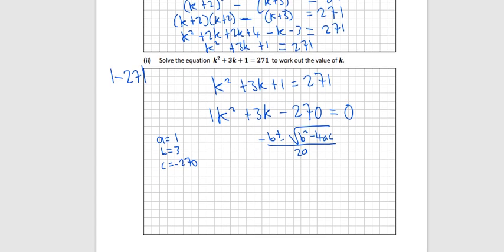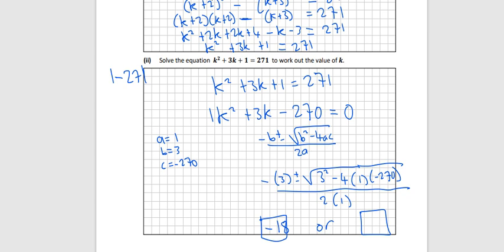Check your log tables for that. You'll have minus 3, put everything into brackets, plus or minus square root 3 squared minus 4 times 1 times minus 270, all over 2 times 1. And then we put it in with a minus first and then with a plus. And we get minus 18 for the minus value, or if you go back and just put it in with a plus, we get 15.